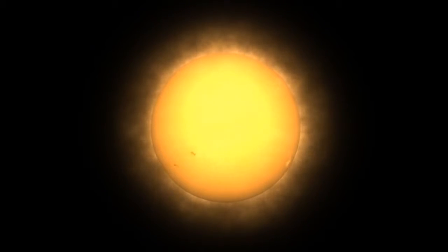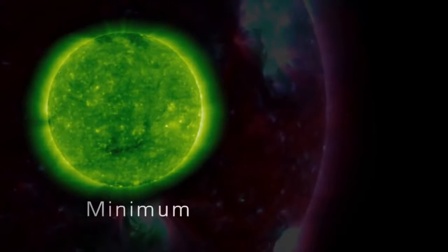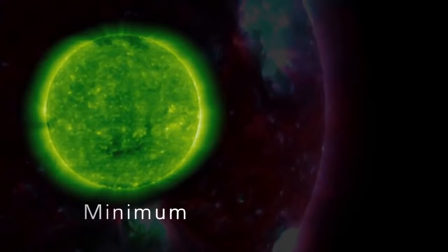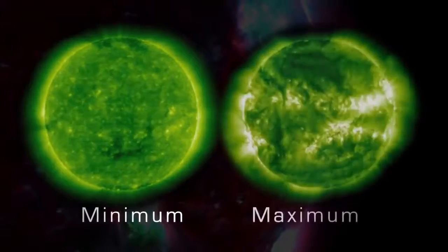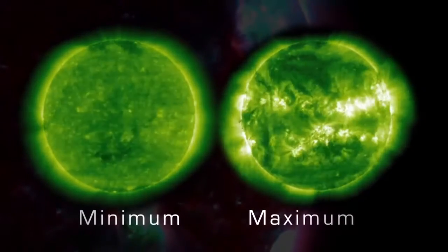During one cycle, the number of sunspots, a good indicator of solar activity, goes from low to high and back down to low. Solar minimum represents a period of time when sunspot numbers are relatively low, and solar maximum represents a period when sunspot numbers are relatively high.